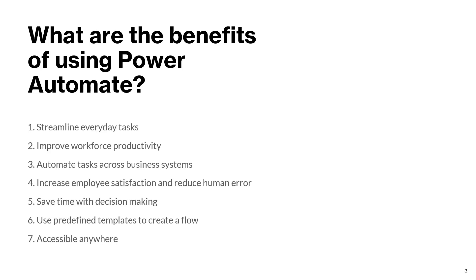It helps you to streamline everyday tasks. Let's say you have a process in which you are receiving multiple emails throughout the day and all those emails have to be processed. Now if a human is going to process them, it would be slightly tricky to take care of each and every email, and there are chances that mistakes might be made while the emails are being sorted. So using Power Automate you can streamline those tasks.